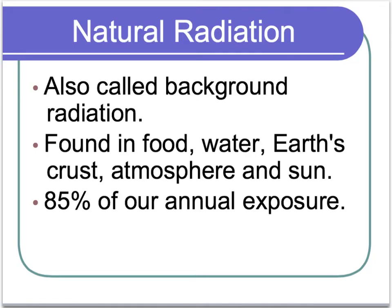Natural radiation is also called background radiation. This is the radiation that we can find in our food, in our water, in the Earth's crust right under our feet, out in our atmosphere, and also coming from the sun. Natural radiation accounts for about 85% of our annual exposure to radiation.